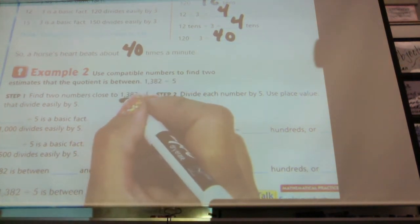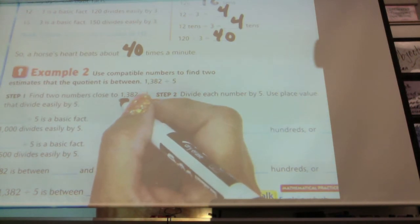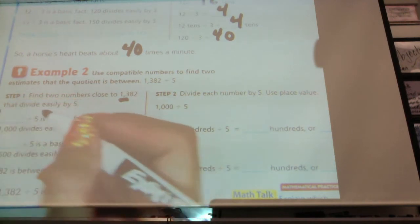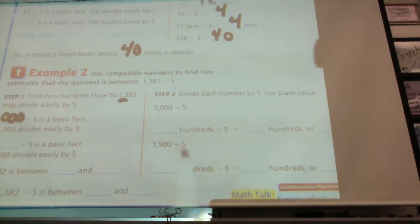Right, because 13, you can take that down to 10, correct? And you can do 10 divided by 5. So we'll take this number down to 1,000 divided by 5, because that divides easily.